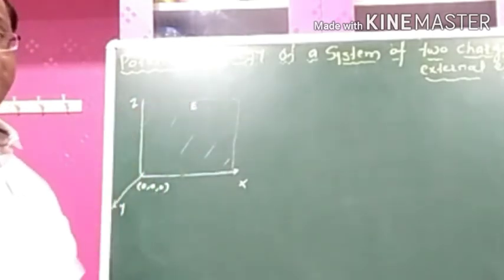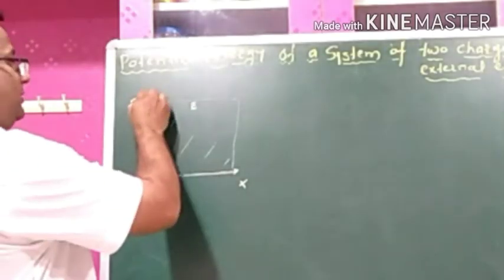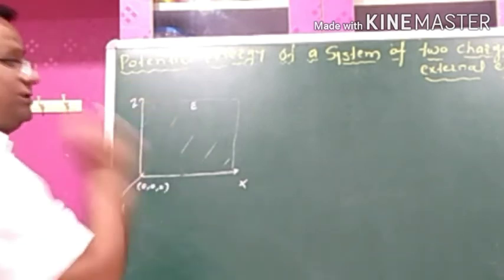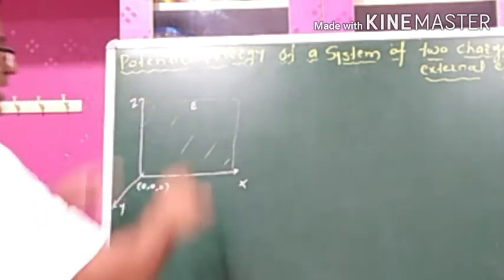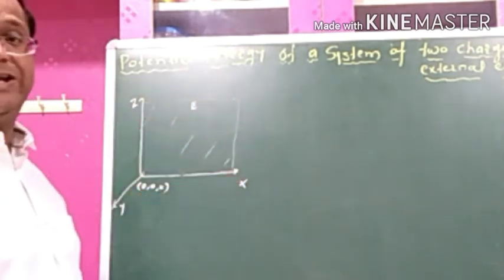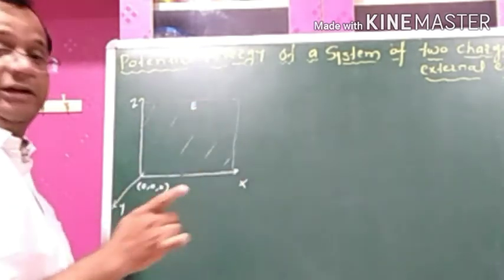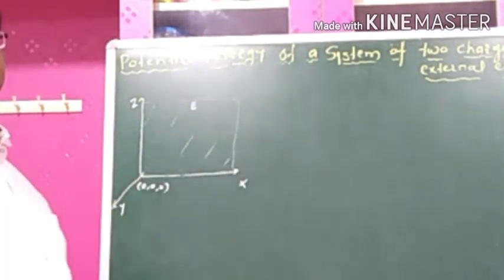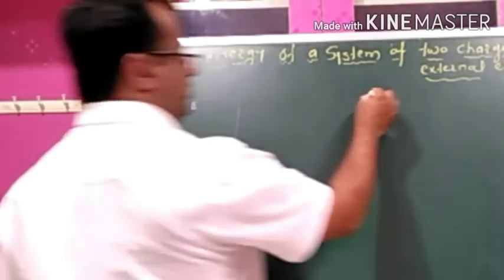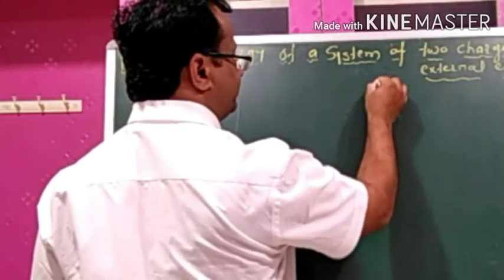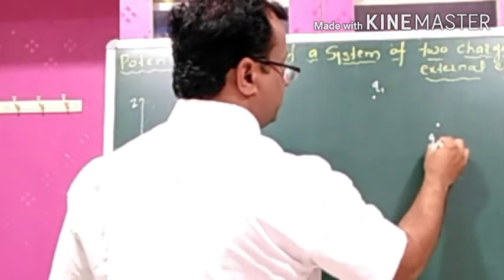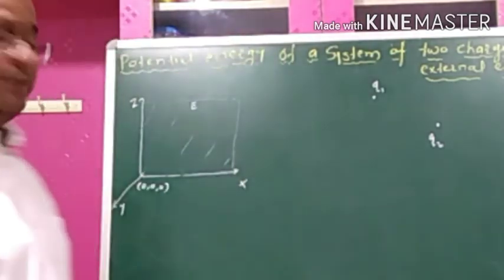Here this will be the x-axis, this will be the y-axis, and this will be the z-axis. In this region, the external electric field of magnitude E is present, and we have two charges — this will be the first charge and this will be the second charge.